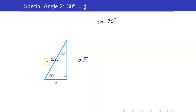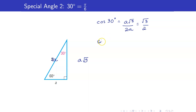Cosine of 30 degrees is adjacent over hypotenuse, so that's a square root of 3 over 2a, which gives square root of 3 over 2. Sine of 30 degrees is opposite over hypotenuse, so that's a over 2a, which is 1 half.